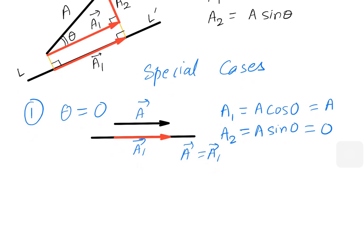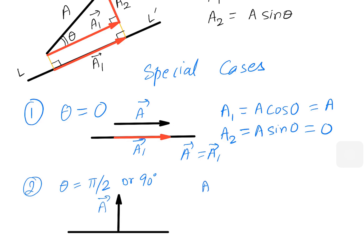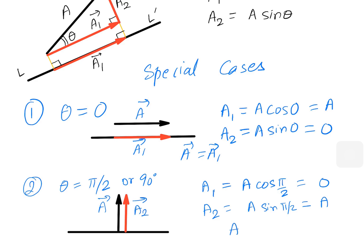The second special case is when theta equals pi by 2, or 90 degrees. The component along the line is A1 = A cos(pi/2) = 0, since cos(pi/2) is 0. And A2 = A sin(pi/2) = A, since sin(pi/2) is 1. So the component perpendicular to the line is the same as vector A, meaning A2 vector equals vector A.